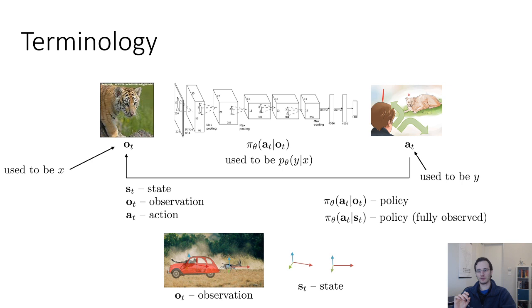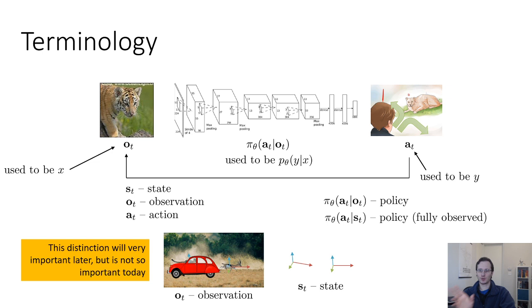So, that's the distinction between state and observation. And this distinction can be very important. For example, if there is some car that drives in front of the cheetah, and you don't see the cheetah anymore, the observation has changed. The observation no longer contains the cheetah. But the cheetah's state is still there. The cheetah still exists. And here's how we can make this a little bit more mathematically formal. By the way, this distinction will be very important later. For today's methods, we'll talk about the imitation learning method. It's actually not that important. But I want to describe it right now, because it will be so important later.